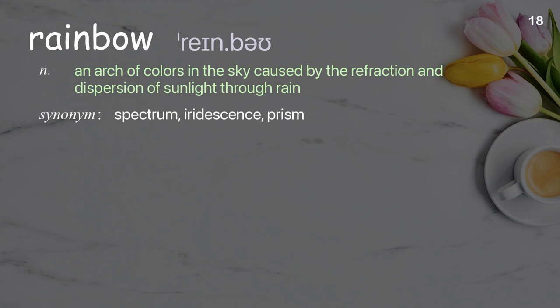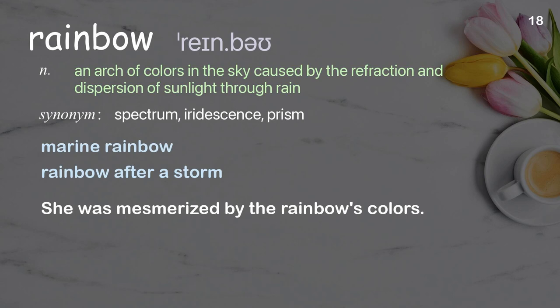Rainbow. An arch of colors in the sky caused by the refraction and dispersion of sunlight through rain. Examples: marine rainbow, rainbow after a storm. She was mesmerized by the rainbow's colors.